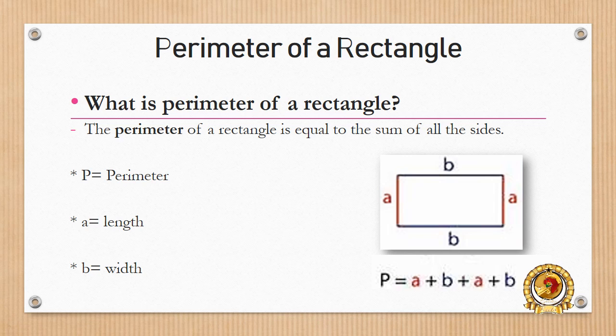So to find the perimeter of a rectangle, you need to add all sides of the rectangle. Look at the picture below.